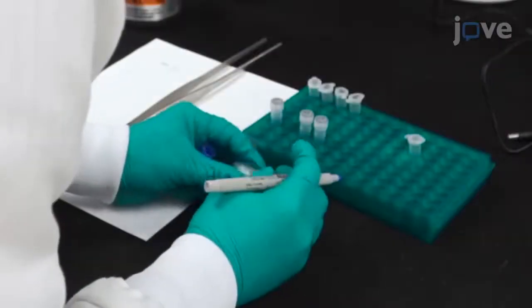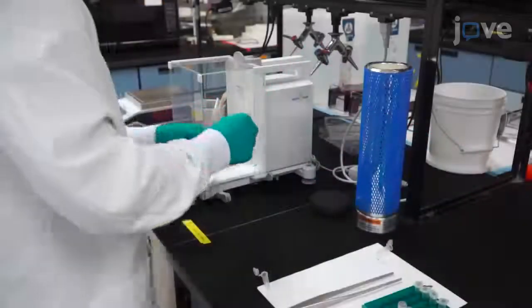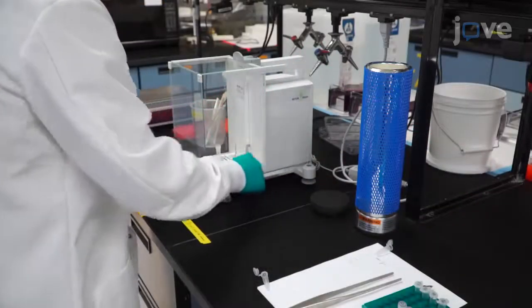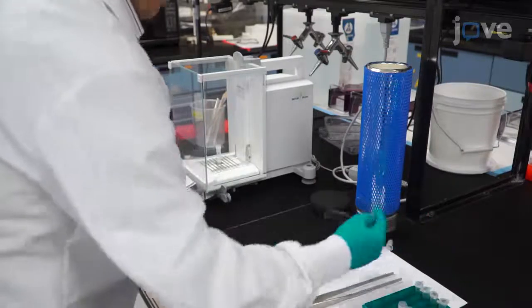Use an ethanol-proof marker to label the side of a 2-milliliter screw-capped bead tube. Next, tare the mass of the labeled bead tube using an analytical balance capable of accurately measuring 0.01 milligrams.